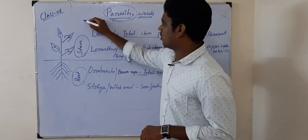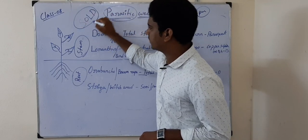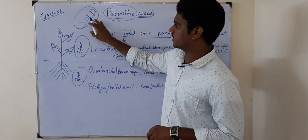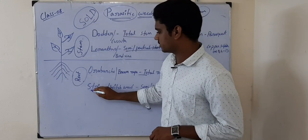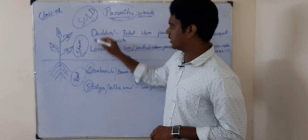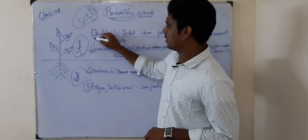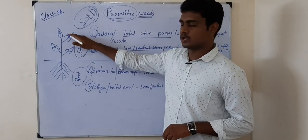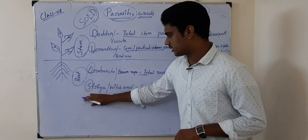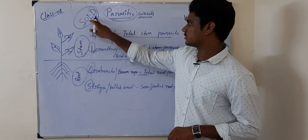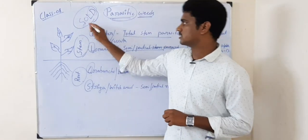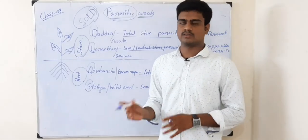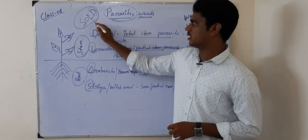I would like to give a small trick to remember — please remember the word 'SOLD.' The first letter S resembles Striga, O resembles Orobanche, L resembles Loranthus, and D is the first letter of Dodder. So when you remember SOLD, come from root to stem: S — Striga (partial root parasite), O — Orobanche, L — Loranthus, D — Dodder. This way you won't be confused about whether it is a partial or complete, stem or root parasite.